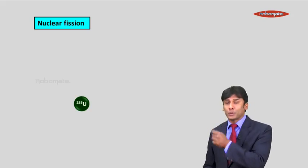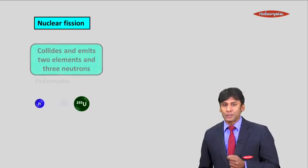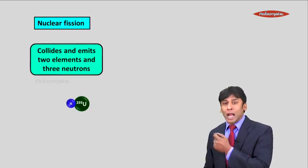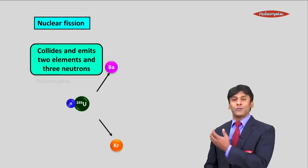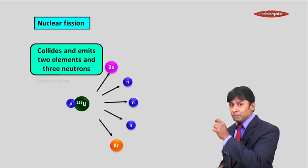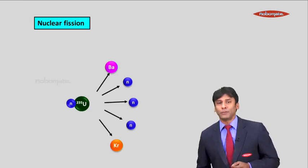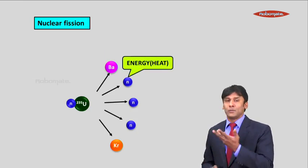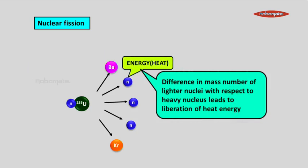Here we have this uranium-235. When uranium-235 is bombarded by slow moving neutrons, that is thermal neutrons, they collide with uranium-235 and uranium-235 splits into barium and krypton with the ejection of three neutrons. Now the mass of barium, the three neutrons and krypton is slightly less than uranium-235. And this mass gets converted into heat. So difference in mass number of the lighter nuclei with respect to the heavy nucleus leads to the liberation of heat energy.